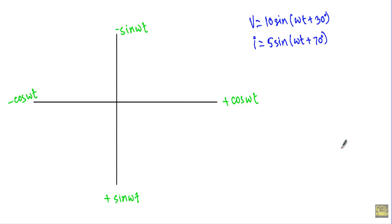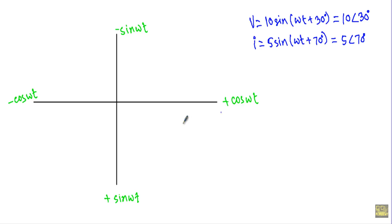Now let me show you how to calculate the phase difference using the complex sine-cosine plane. We have V = 10sin(ωt + 30°), which in phasor form is 10∠30°, and the current I = 5sin(ωt + 70°) becomes 5∠70° in phasor form. On the sine-cosine plane, the initial axis is sine ωt with φ = 0. Rotating counterclockwise gives a positive angle; rotating clockwise gives a negative angle.